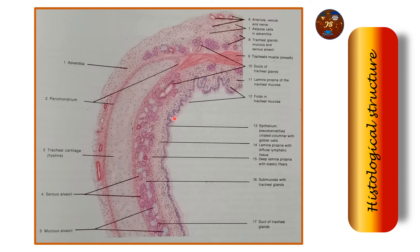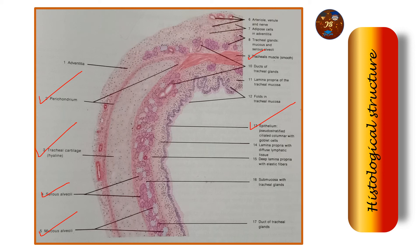Once you have identified the hyaline cartilage and the pseudo-stratified epithelium, be sure that you are identifying the histological section of trachea. For labeling, you should definitely label: the tracheal cartilage, the perichondrium, the pseudo-stratified ciliated columnar epithelium with goblet cells, serous alveoli, mucous alveoli, the muscle, and the ducts of the tracheal glands — that will be enough for labeling.